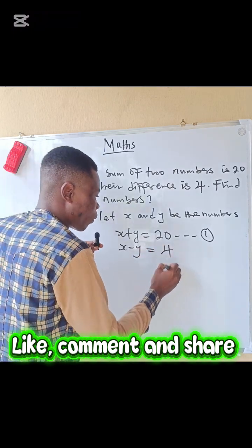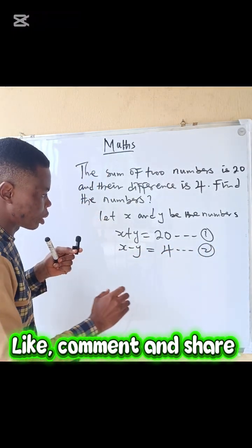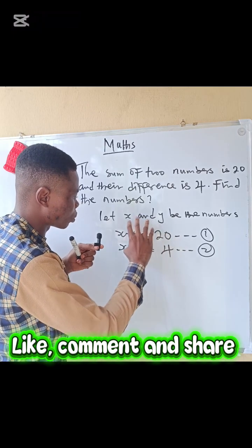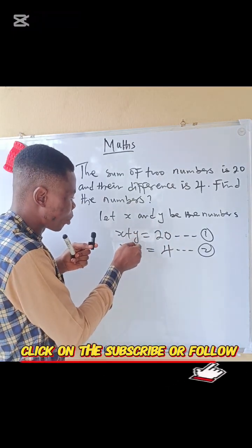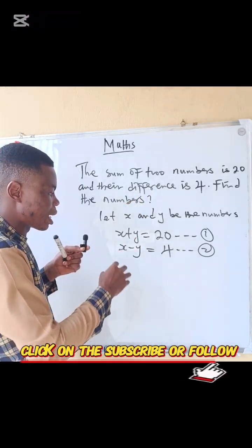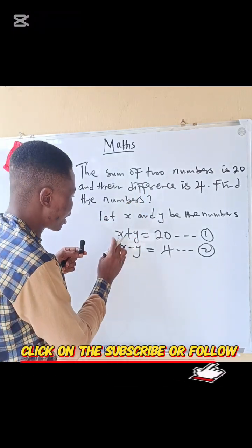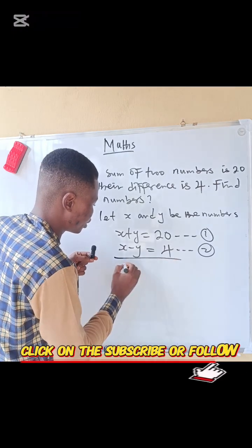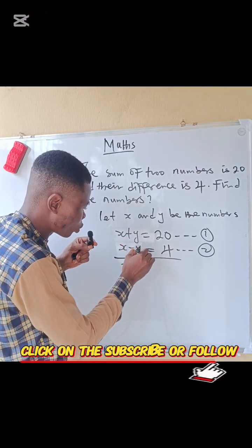So look at the two equations. If we add the two equations, we are going to eliminate y because this is going to be y plus minus y, and y will cancel out. Now calculate for x. Let's do that. X plus x, that is 2x. Plus y plus minus y is going to give you zero.